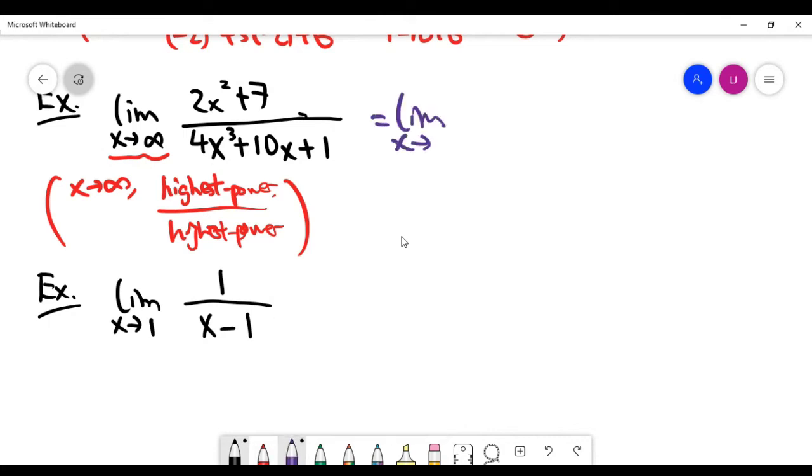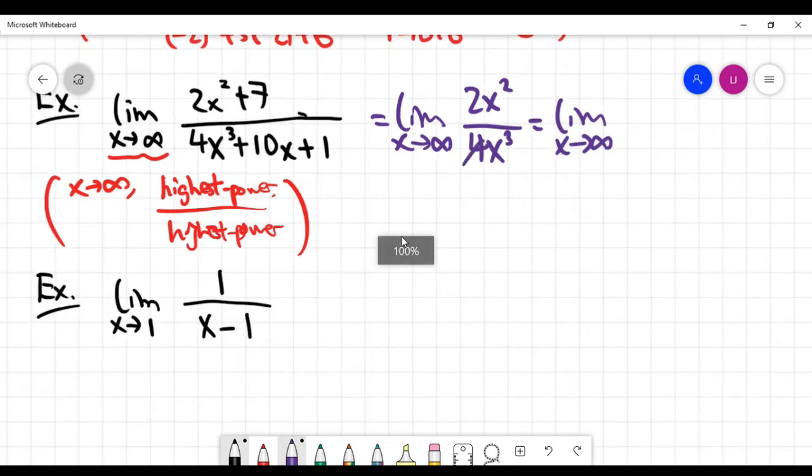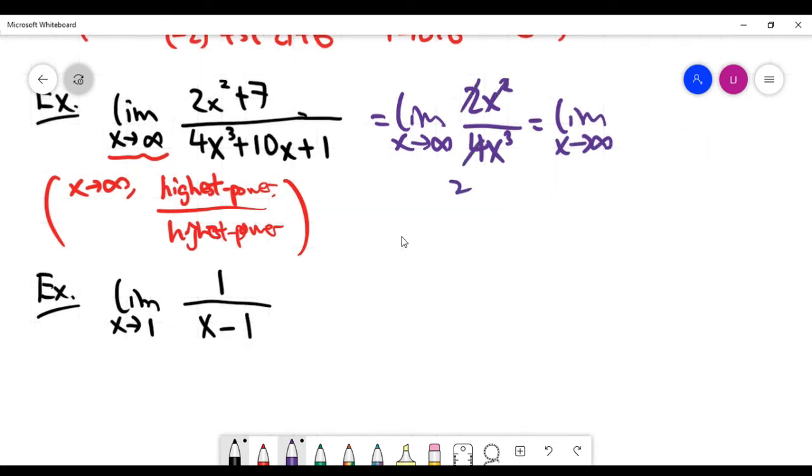So basically, it means when x goes to infinity, I can just keep the highest power term at the top and the highest power term at the bottom. And we can cancel out something. 2 is cancelled by a factor of 2 out of 4. So you see, it is 2 here. And here, I think only one copy of x left. So we are having a limit problem now which is 1 divided by 2x.